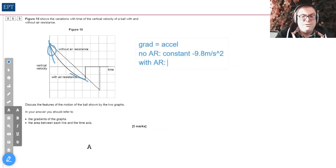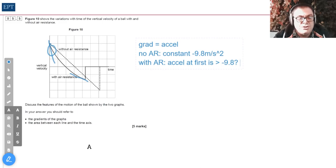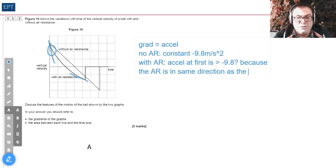With air resistance, we can say that the acceleration at first is greater than -9.8 m/s². Why is this? This is because the air resistance is actually pushing downwards because the ball is going upwards, and it's pushing downwards in the same direction as the weight. Therefore there's more force downwards, so acceleration downwards is greater than 9.8 because the air resistance is in same direction as the weight.